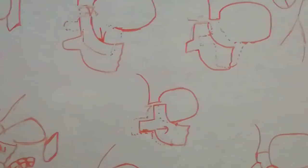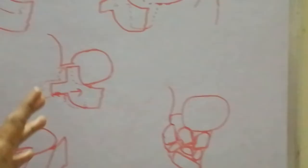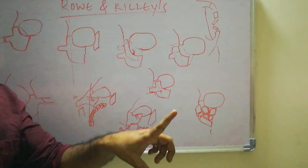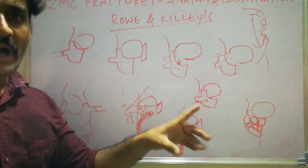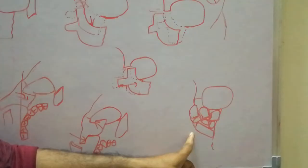Type 6 in the Rowe and Killey classification is displacement of the orbital floor — this will be discussed in the orbital fractures section. Type 7 is displacement of the orbital rim segment. Type 8 is complex comminuted fractures of the zygomatico-maxillary complex, where the entire complex is broken into multiple pieces — also called a 'bag of bones' — with complete fragmentation of the ZMC.